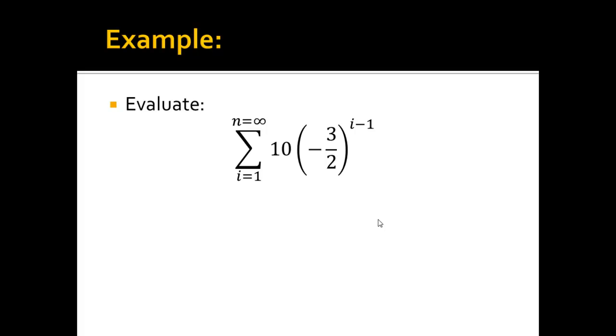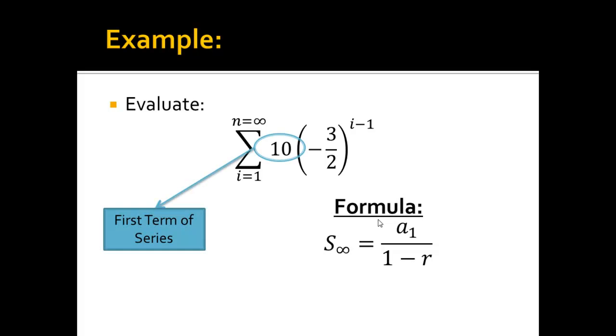So the same type of situation here. I set this up the same way, same formula. First term is going to be 10. This is my r value, common ratio, and that will go down there.